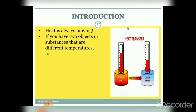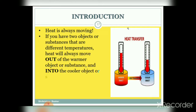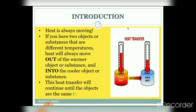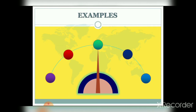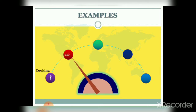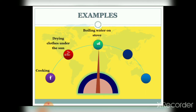Heat is always moving. If you have two objects or substances at different temperatures, heat will always move out of the warmer object and into the cooler object. This heat transfer will continue until both objects are at the same temperature.